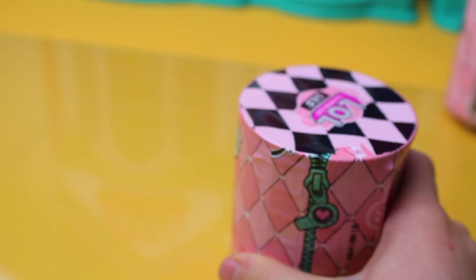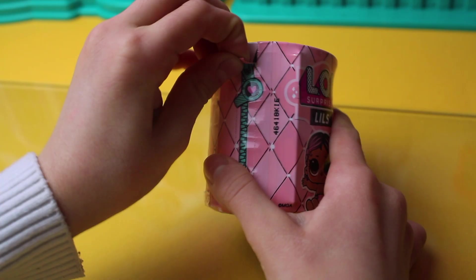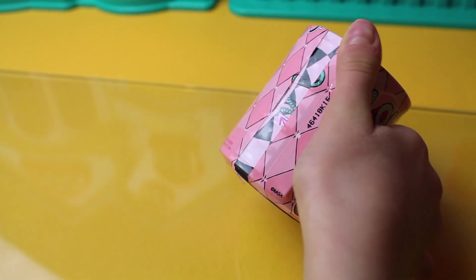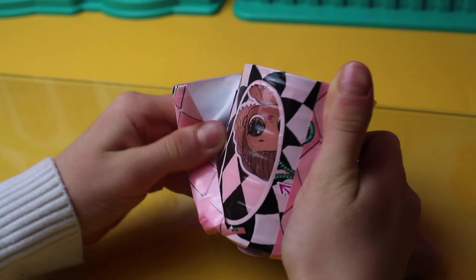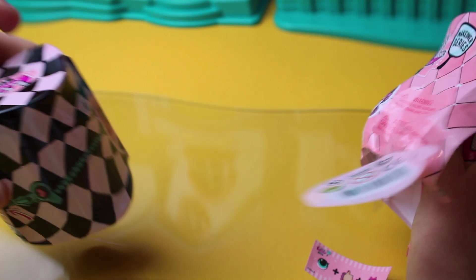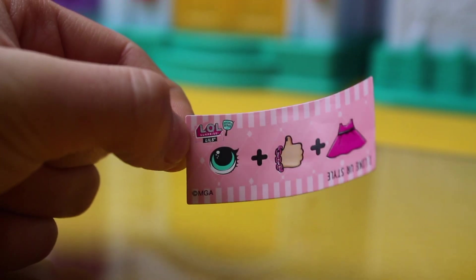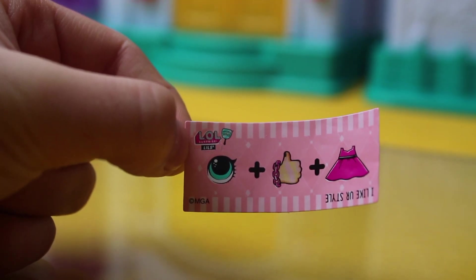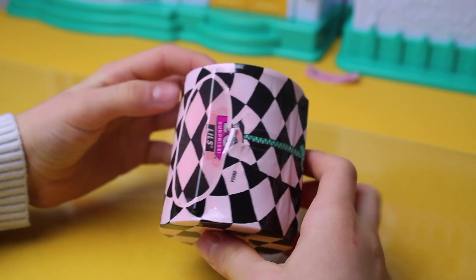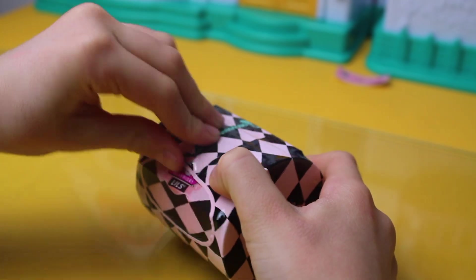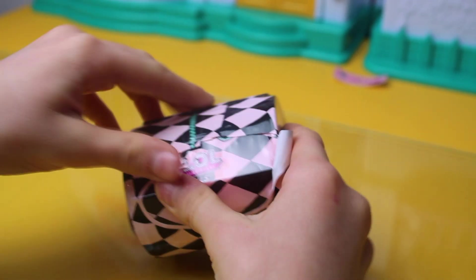So guys, now let's open this first layer. And there's a secret message. Eye and like a hand and a dress. Now let's open the second layer. And it's so hard to open it.